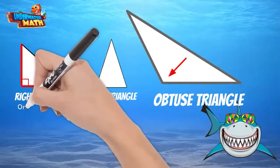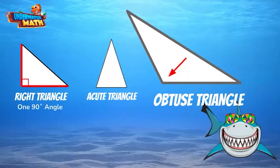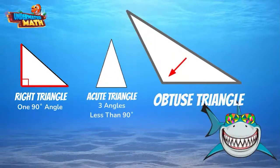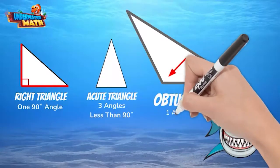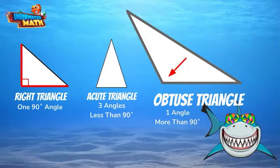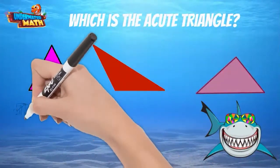To recap: right triangles have one 90 degree angle, acute triangles have three angles less than 90 degrees, and obtuse triangles have one angle greater than 90 degrees. Check out these three triangles — Finn is going to help you find the acute triangle. Which one do you think it is?